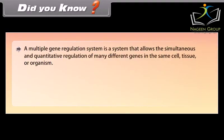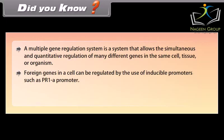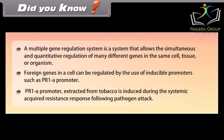A multiple gene regulation system is a system that allows the simultaneous and quantitative regulation of many different genes in the same cell, tissue, or organism. Foreign genes in a cell can be regulated by the use of inducible promoters such as the PR1A promoter. The PR1A promoter, extracted from tobacco, is induced during the systemic acquired resistance response following pathogen attack.